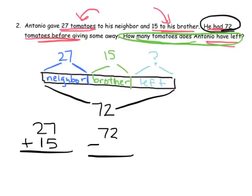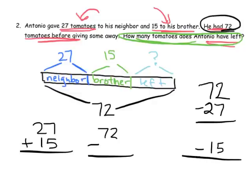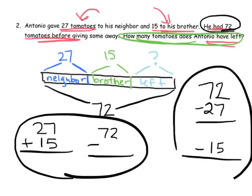Another idea is some students might do subtraction twice. They might take 72, subtract 27, and then subtract 15. Both of these solutions, these strategies, will work. And the idea is, it all comes out of this tape diagram. And they can explain why their strategy will work based on this tape diagram.